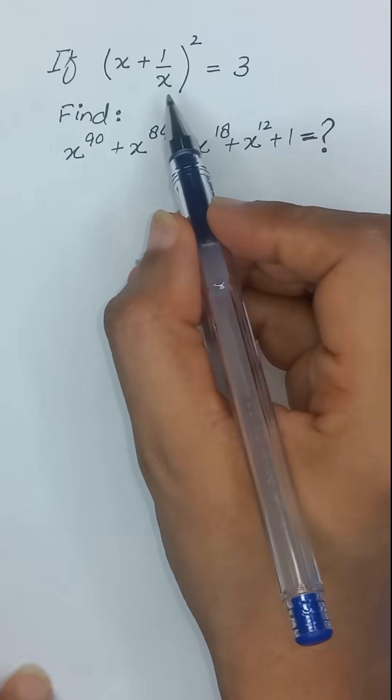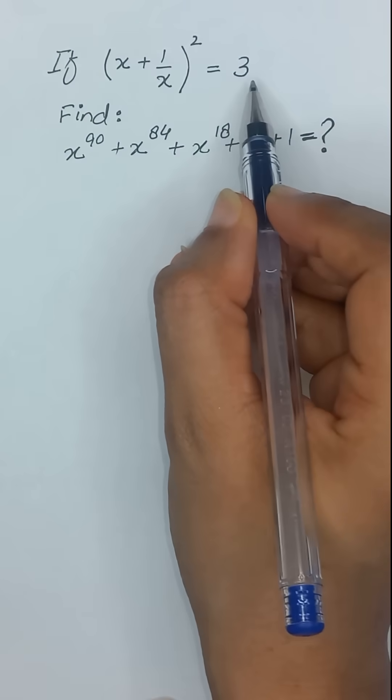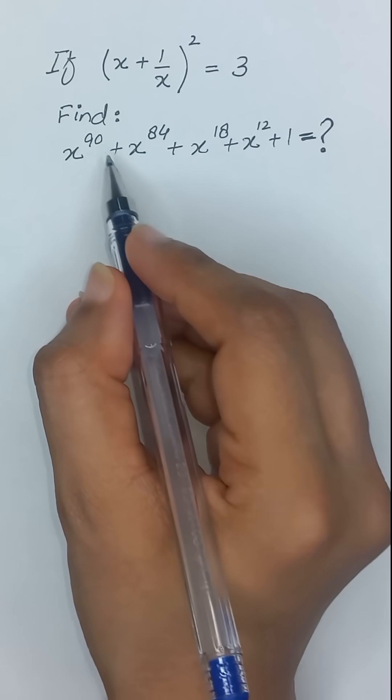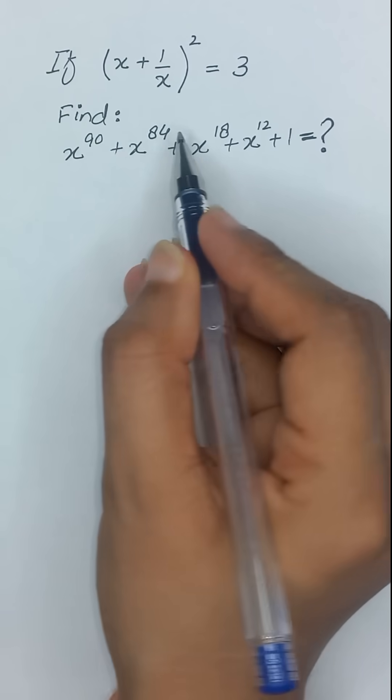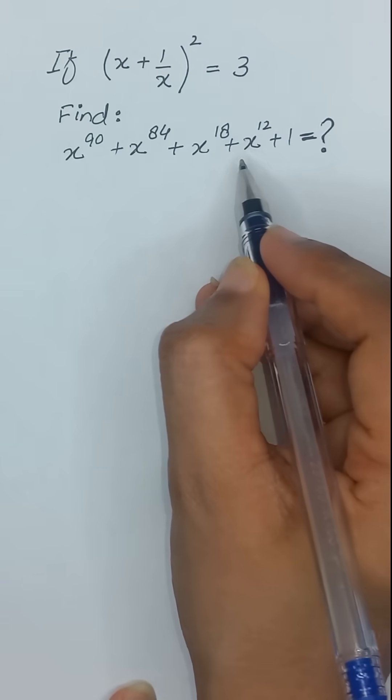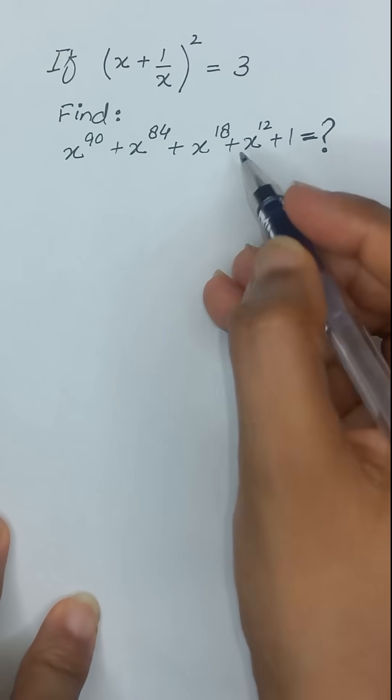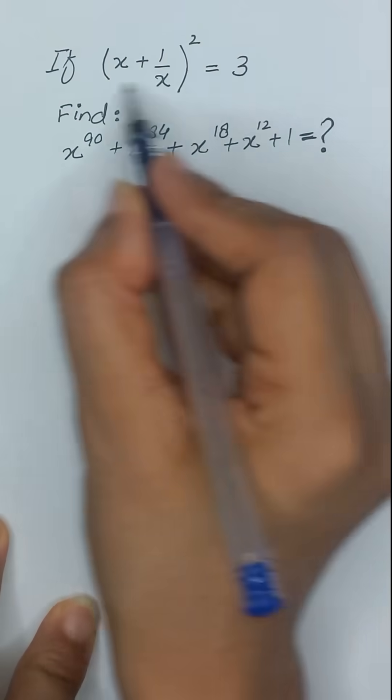If x plus 1 divided by x, whole square, is equal to 3, what will be the value of x to the power 90 plus x to the power 84 plus x to the power 18 plus x to the power 12 plus 1? So let's start.